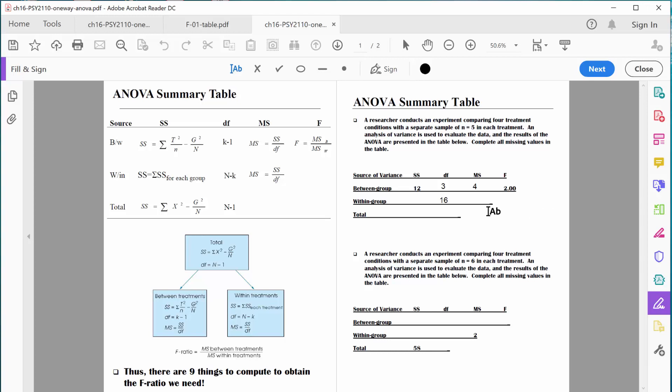Well, degrees of freedom total should be 3 plus 16, which is 19. And we can look at this formula as well. It says degrees of freedom total can be computed by taking the total number of people overall, which we know is 20, and subtracting 1. So that way it equals 19 as well. So I'm feeling good. It's making sense. We were able to compute that number two different ways.